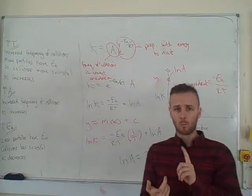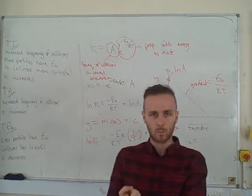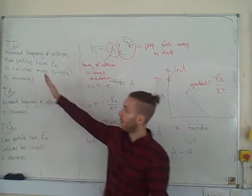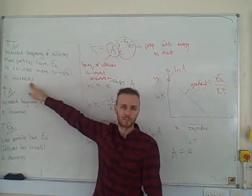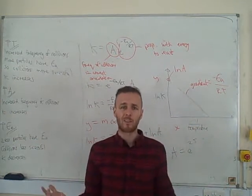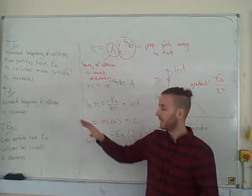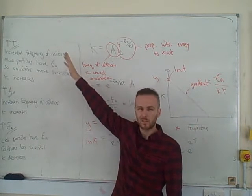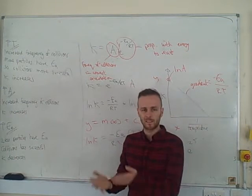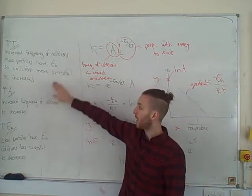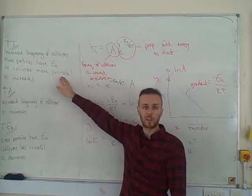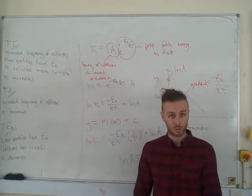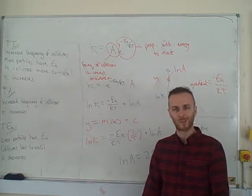So we've got particles colliding more frequently, and when they do collide, they're more likely to be able to react because more of them have the activation energy. Therefore, as your temperature increases, k increases, which makes sense. At a higher temperature, you're going to have a faster rate, aren't you? Mostly, just FYI, it is this second factor which causes that. The increased frequency of collisions does matter, it is an effect, but it's a minor effect compared to the fact that more of them have the activation energy. And if you go back to Boltzmann distribution, you can have a think about how that Boltzmann distribution shows that. I've got a video on that you can look up as well.